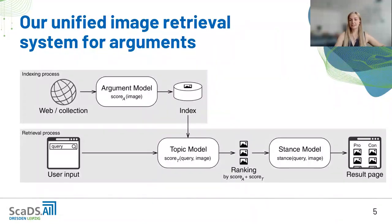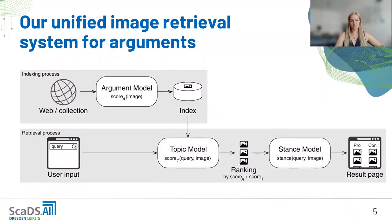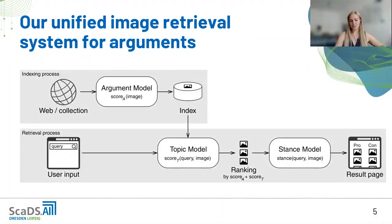We propose a unified image retrieval system for arguments, split into two processes. First, the indexing process takes all images and puts each through the argument model, which determines an argument score A saved in the index. Then during the retrieval process, the user inputs a query, the topic model determines a topic score T for each image, we rank all images by the sum of score A and score T, and finally the stance model divides the ranked list into a pro and a con list.